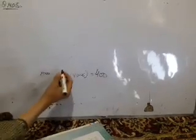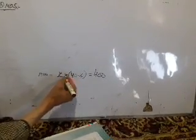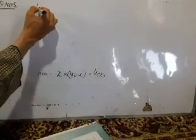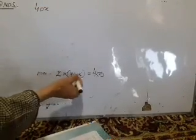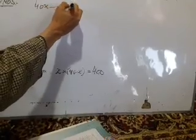So let's see if it is possible or not. Let's make a quadratic equation here. 40 into x, that is 40x, x into minus x, that is minus x square, is equal to 400.